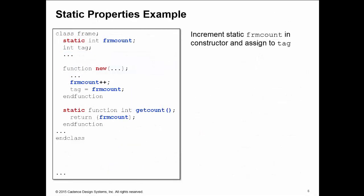So let's see an example of this. We're going to use these two properties we've been using so far, frame count and tag, to show you an interesting implementation for static properties.